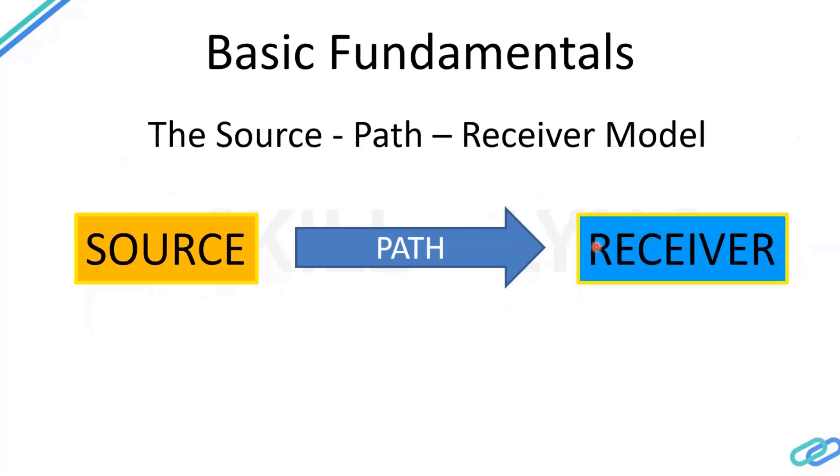One basic fundamental that I wanted to include in this presentation is the source-path-receiver model. When we are trying to model acoustic and vibration response virtually, that is in a computer model, or it could be a test model as well, we can think of the sound, the physics of the sound transmission reception phenomena like a simple model. We have the source - it could be an engine, an electric motor, it could be a fan, it could be raindrops on the roof of the car, it could be road noise, a lot of things. The path could be the body of the vehicle, the air inside, the cushions, whatever the sound and vibration can travel through.